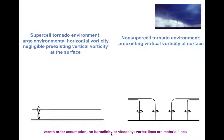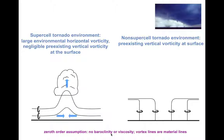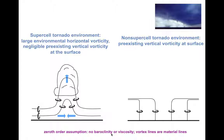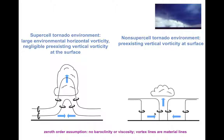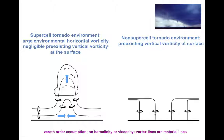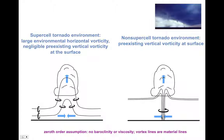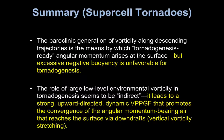Non-supercell tornadoes involve pre-existing vertical vorticity. In the supercell case, we get rotation by tilting horizontal vorticity. In non-supercell tornado environments — like water spouts and land spouts — there's always pre-existing vertical vorticity, and we simply converge those vortex lines to make a tornado. It's essentially just the figure skater process: we bypass the downdraft and baroclinic generation process and skip right to intensifying pre-existing surface rotation via stretching.